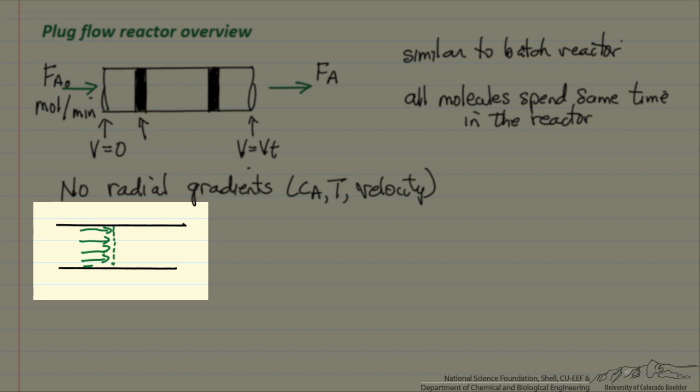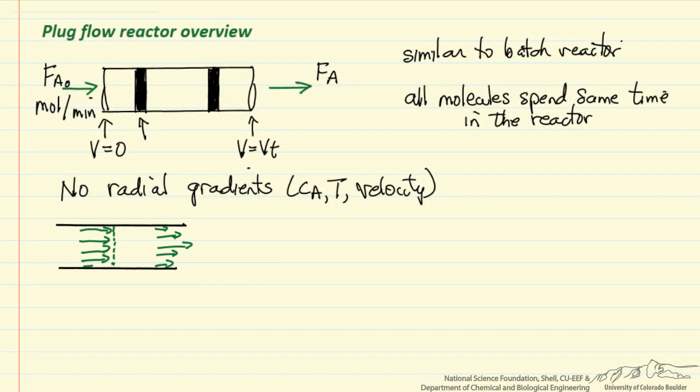This is in contrast to a laminar flow reactor where the velocity would be low near the wall, bigger in the center, and again lower near the wall in a parabolic flow. Turns out plug flow reactor is not a bad approximation to a laminar flow reactor.